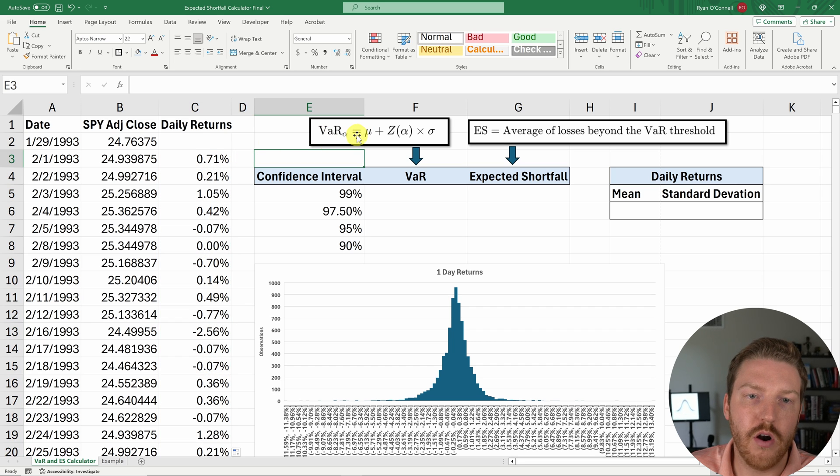VaR is going to be equal to the mean plus the Z score at that confidence level multiplied by the standard deviation. And so this is the parametric method for calculating VaR that I'm using. I have videos on how to calculate VaR in all the three different main methods: historical method, Monte Carlo method and parametric method if you're interested.